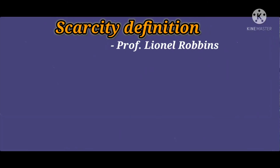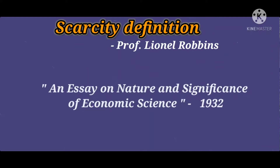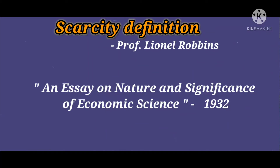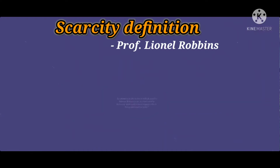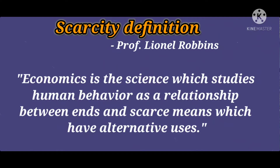Hello everyone, welcome back to my channel Sci-Economics Point. In today's lecture we'll discuss the scarcity-oriented definition given by Robbins. Professor Lionel Robbins, an English economist, in his book 'Nature and Significance of Economic Science' published in 1932, gave a more exact and precise definition of economics. According to Robbins, economics is the science which studies human behavior as a relationship between ends and scarce means which have alternative uses.